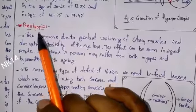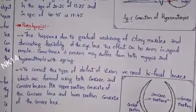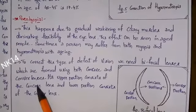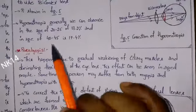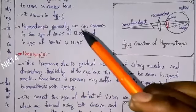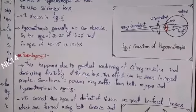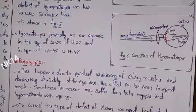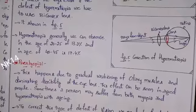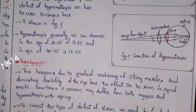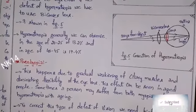Presbyopia occurs in old age — the person cannot see either near or far distance. To correct this, bifocal lenses are used. Hypermetropia is commonly seen in the age group of 40 to 45, and as age increases it can convert to presbyopia, where both myopia and hypermetropia defects may occur together. For better understanding, first see the video on the structure of the human eye — the link is in the description. Please subscribe the channel for more videos.